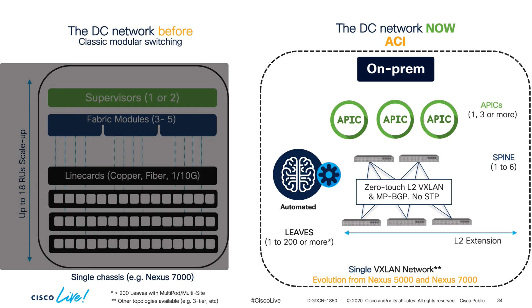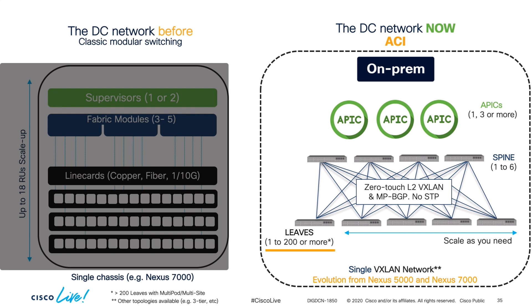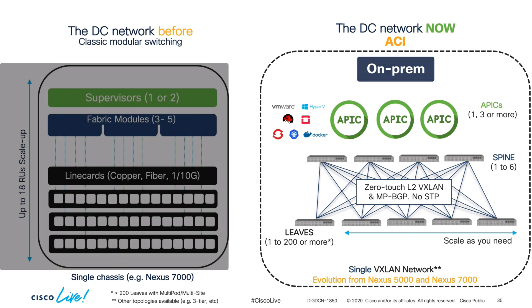This is great especially because you're extending Layer 2 from any leaf to any leaf and using every link from the leaf to the spine layer, leveraging equal-cost multi-pathing. You can scale your network as your business grows very simply and automatically — need more ports, add more leaves; more throughput between them, add more spines; more redundancy at the management level, add more APICs. It is that simple. Virtual and container networking from multiple vendors is also integrated as part of the solution at no additional cost.